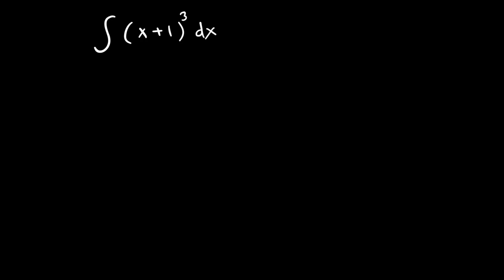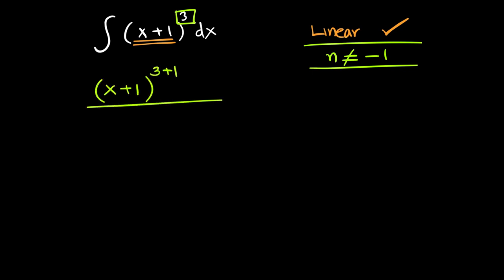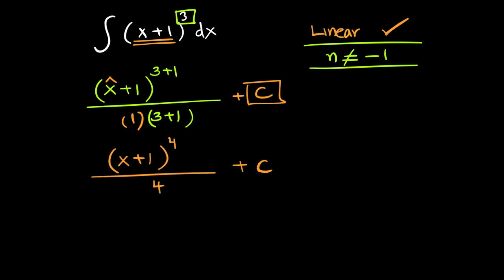Let's apply this rule. Integrate (x + 1)³ dx. First check: is this a linear expression? Yes. Second check: is the power valid for the chain rule? Yes, because the power can be anything except negative 1. Increase the power by 1, divide by the new power, divide by the coefficient of x, and write plus c. So we get (x + 1)⁴ / 4 + c.